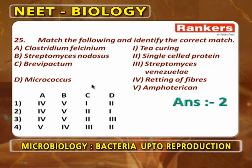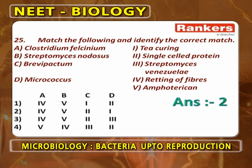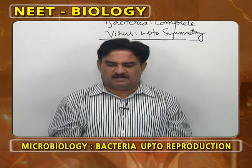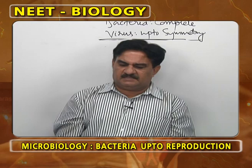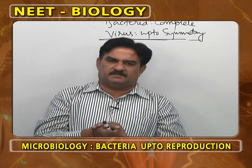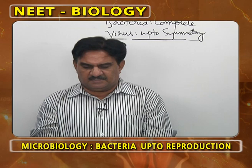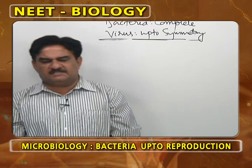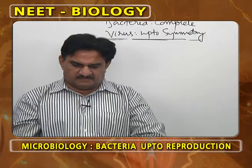Match the following: Clostridium felsineum helps in retting of fibers. Streptomyces nodosus gives amphotericin. Brevibacterium is used for single-celled protein production. Micrococcus is used in curing tea. So the correct answer is the second option.